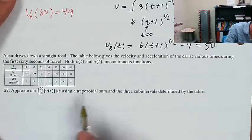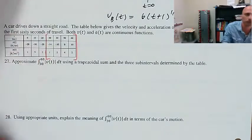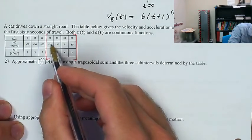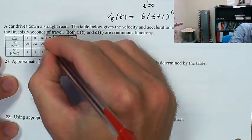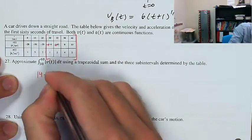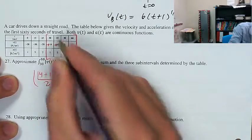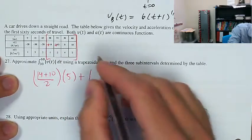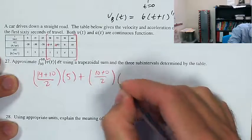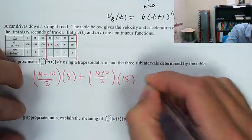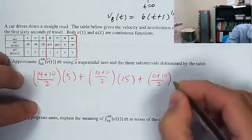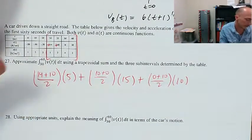Trapezoidal sum with three subintervals going from 30 to 60 using |v|. Blocking off the relevant domain: (14 + 10)/2 times 5, plus (10 + 0)/2 times 15 (from 35 to 50), plus (0 + 10)/2 times 10 (from 50 to 60). That's the trapezoidal approximation.